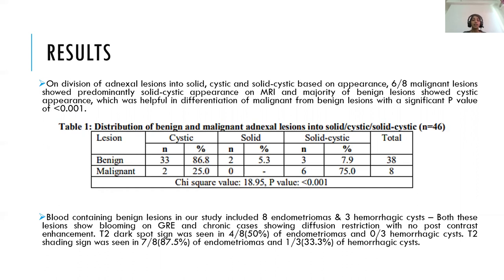Blood-containing benign lesions in our study included 8 endometriomas and 3 hemorrhagic cysts. Both showed blooming on GRE, and chronic cases showed diffusion restriction with no post-contrast enhancement. The T2 dark spot sign was seen in 4 out of 8 (50%) endometriomas and 0 hemorrhagic cysts, whereas the T2 shading sign was seen in 7 out of 8 (87.5%) endometriomas and 1 of the 3 hemorrhagic cysts.